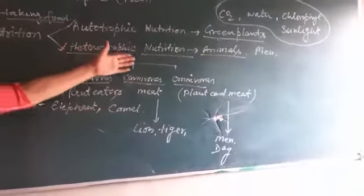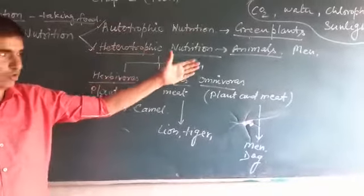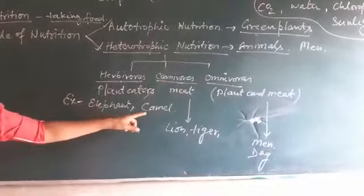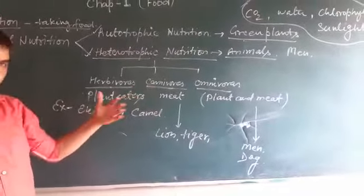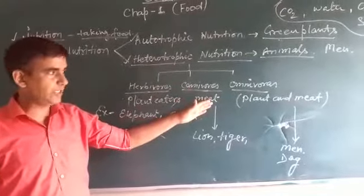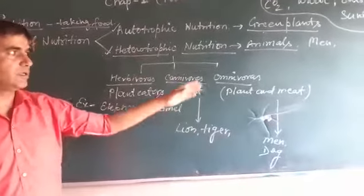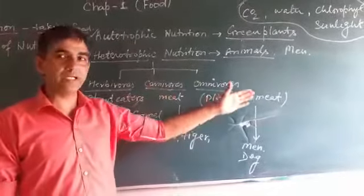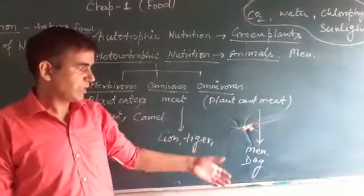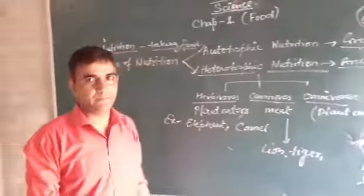Heterotrophic nutrition can be divided into herbivorous, carnivorous, and omnivorous. Herbivorous are plant eaters — examples: elephants, camels, and many more. Carnivorous eat meat only — examples: lion, tiger. Omnivorous eat both plant and meat — examples: man, dog, and many more.